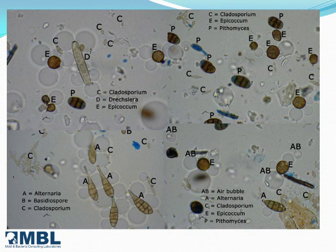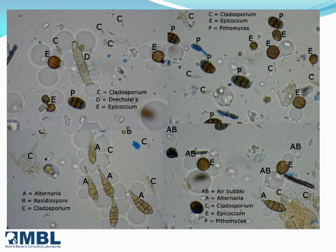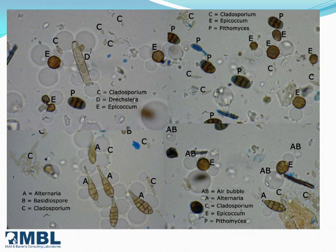The best way to see the color of spores is to use water as the mountant. However, water may not be used as a mountant for spore trap analysis because most of the small, colorless spores would be difficult to see under the microscope.